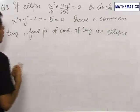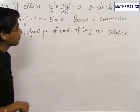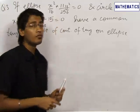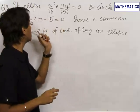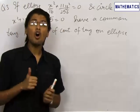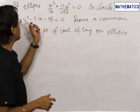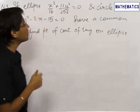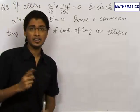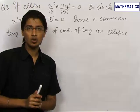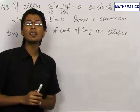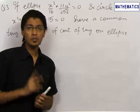These kinds of problems are always solved by either writing the equation of tangents for both curves — the ellipse and the circle — and comparing them, or by writing the equation of tangent for one curve and putting y in terms of x in the other curve and making the discriminant equal to 0. These are the two methods applied when a line is tangent to two curves.